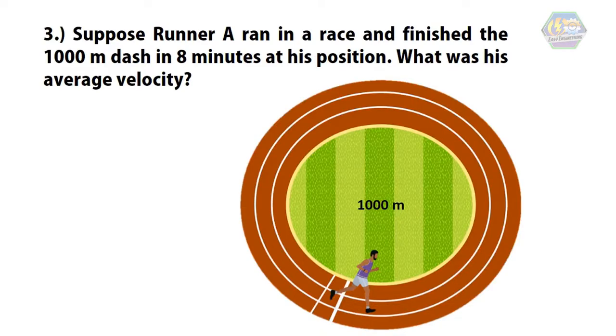To end this video, here is an interesting question: Suppose Runner A ran in a race and finished a 1000-meter dash in 8 minutes. At his position, what was his average velocity?